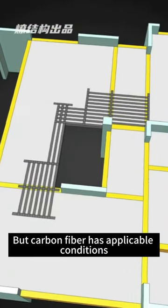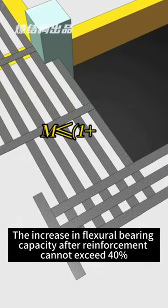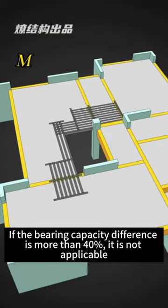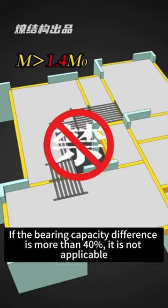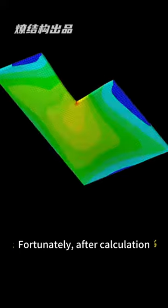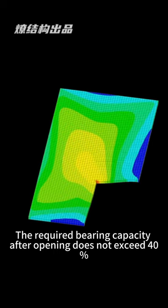The increase in flexural bearing capacity after reinforcement cannot exceed 40%. If the bearing capacity difference is more than 40%, it is not applicable. Fortunately, after calculation, the required bearing capacity after opening does not exceed 40%.